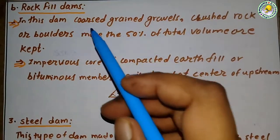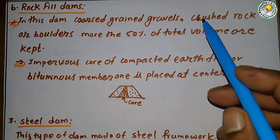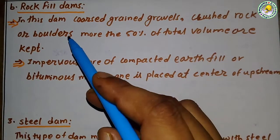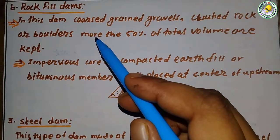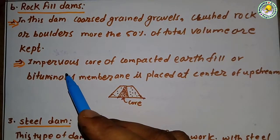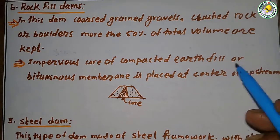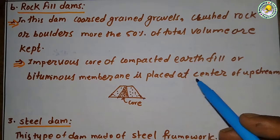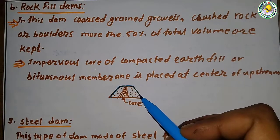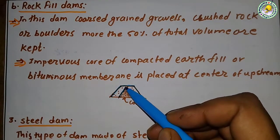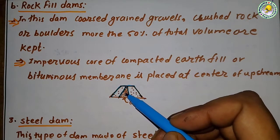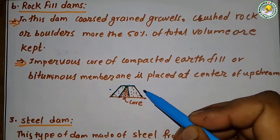In a rock fill dam, coarse-grained gravels, crushed rock, or boulders make up more than 50 percent of the total volume. An impervious core of compacted earth fill or bitumen is placed at the center, as shown in the figure, to resist water seepage from upstream to downstream.